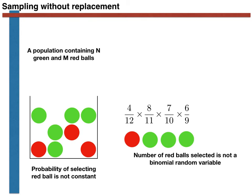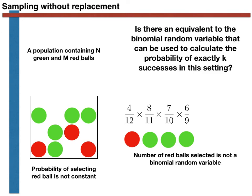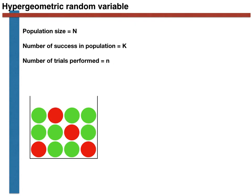This sort of reasoning is pretty easy to perform, but what we have calculated is the probability of a particular sequence of results. What we would like, ideally, is a random variable that does for sampling without replacement what the binomial random variable does for sampling with replacement — in other words, a random variable that measures the probability that we will draw out exactly k red balls without replacement. The random variable that measures the probability that we will draw out exactly k balls if we perform n draws without replacement is the hypergeometric random variable.